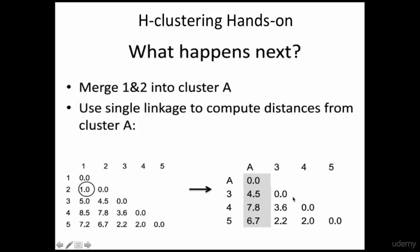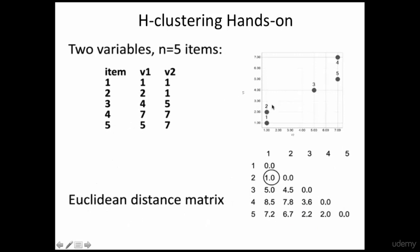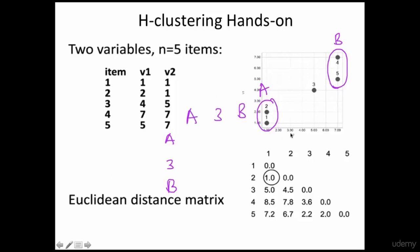Looking at this matrix, the least value is 2.0, which is the distance between 4 and 5. So you are going to group 4 and 5 together to form Cluster B. Now you have Cluster A (records 1 and 2) and Cluster B (records 4 and 5). To calculate the distance between B and 3, you look into which value in Cluster B is closest to 3 — that's 5 — so the distance between 3 and Cluster B is the distance between 3 and 5.